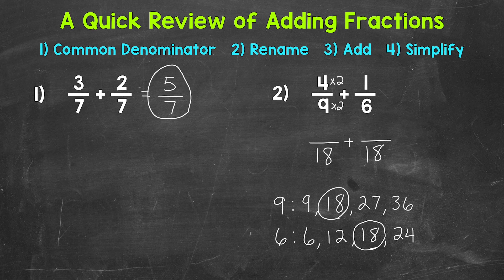Let's do 1 sixth. So how do we get 6 to equal 18? 6 times 3 is 18. So we need to do the same thing to the top in order to keep this equivalent. 1 times 3 is 3. Now we have the fractions in our original problem renamed with that common denominator of 18. So we can add.